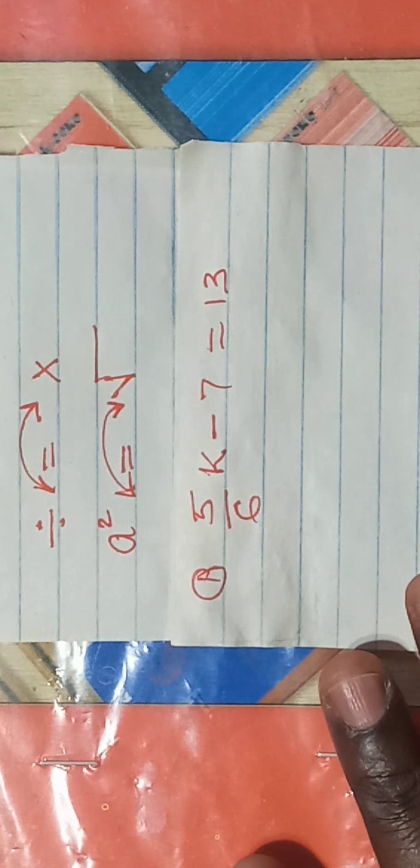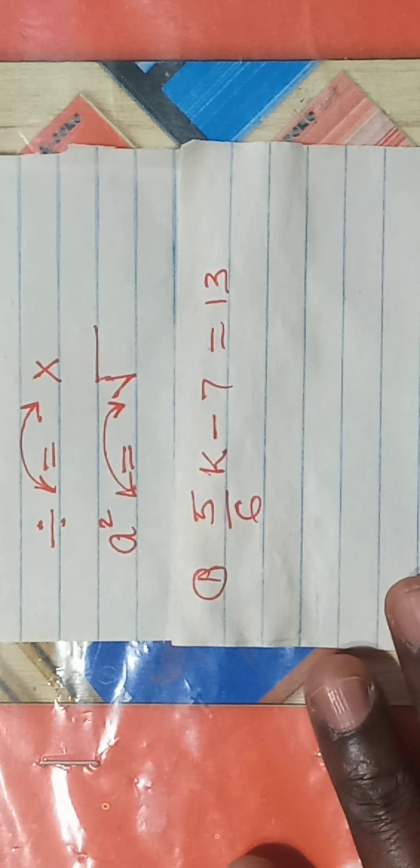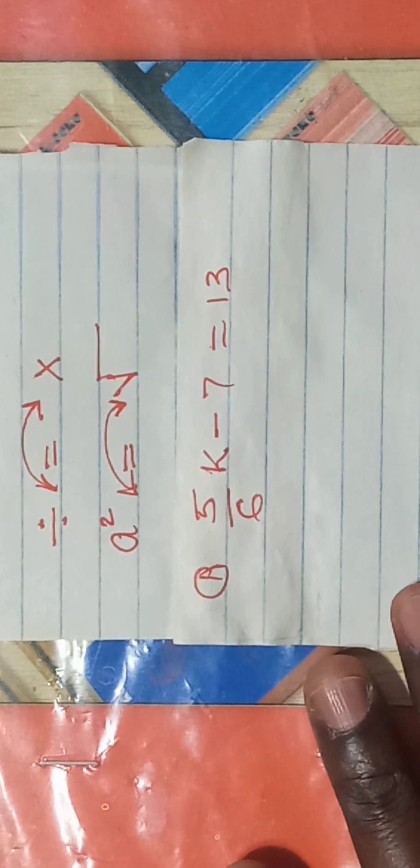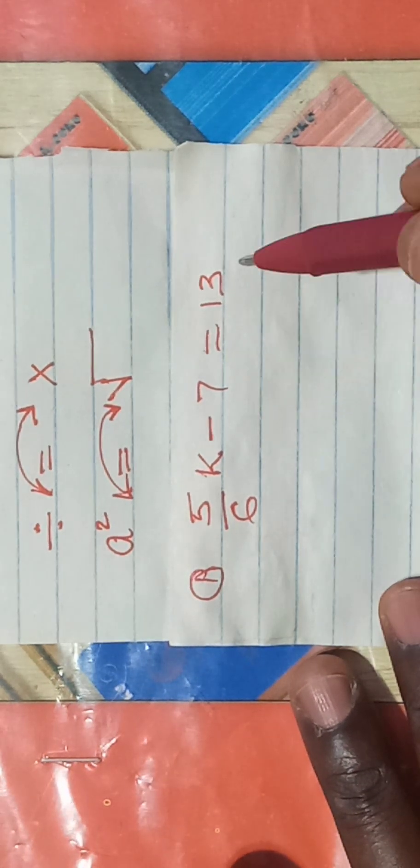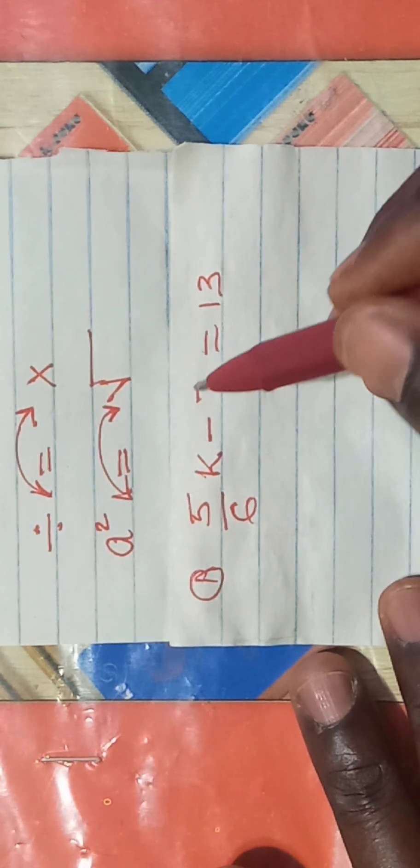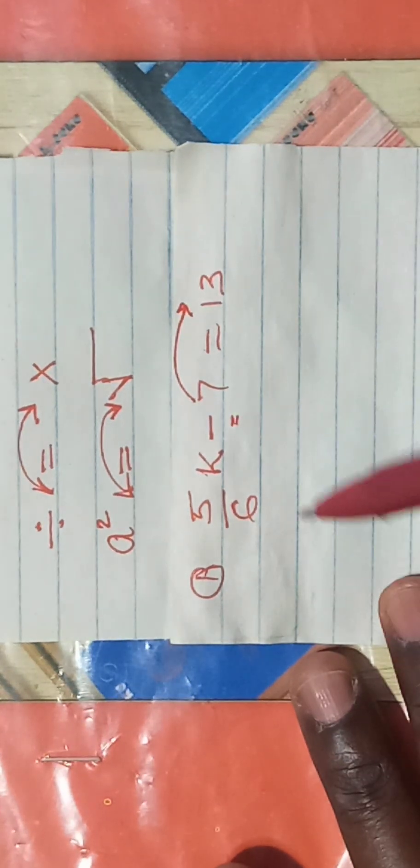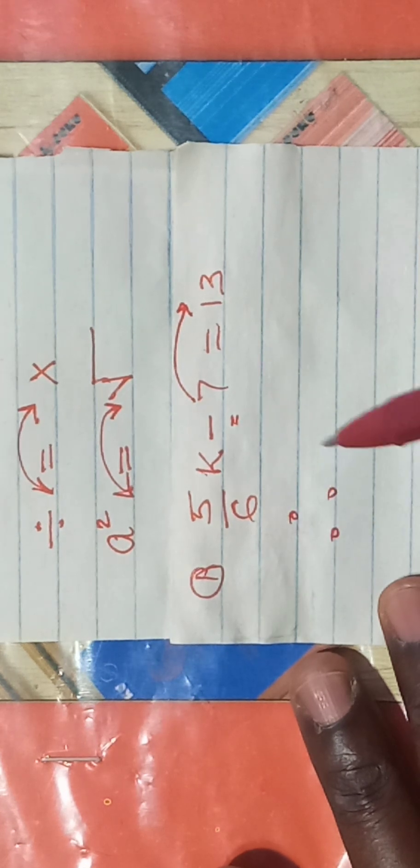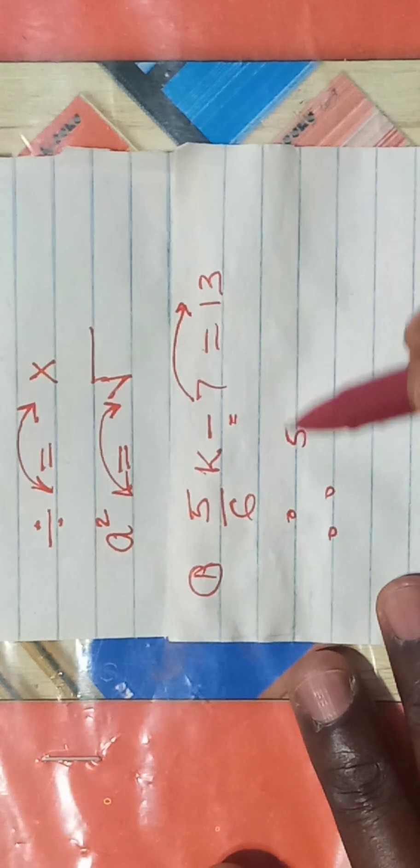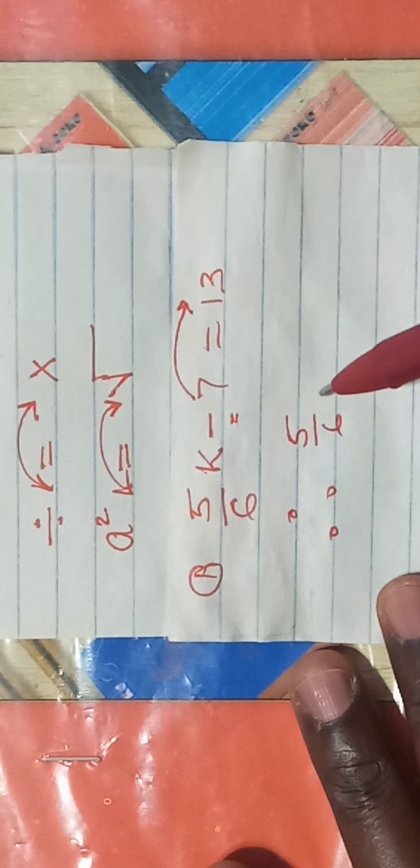Step number one is to collect the like terms. What are the like terms here? 7 and 13 are like terms. 7 will cross onto the other side together with its sign. So it will be 5 over 6k.